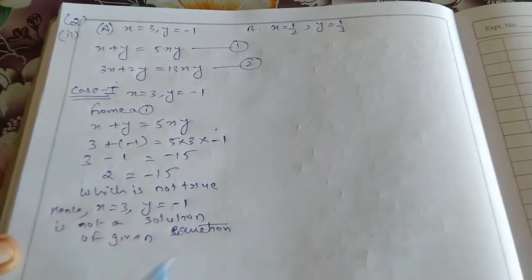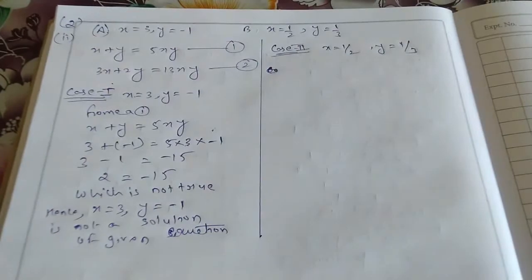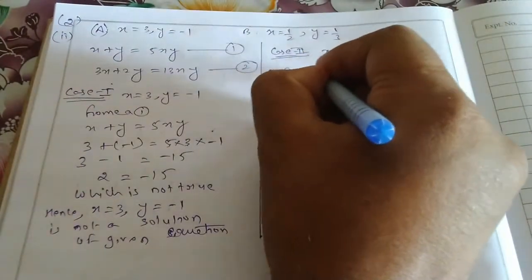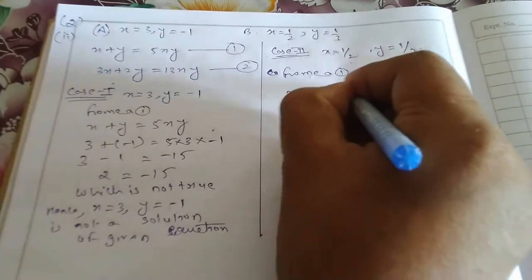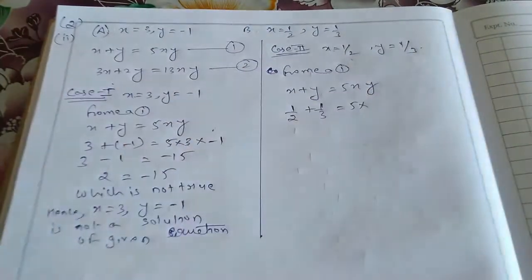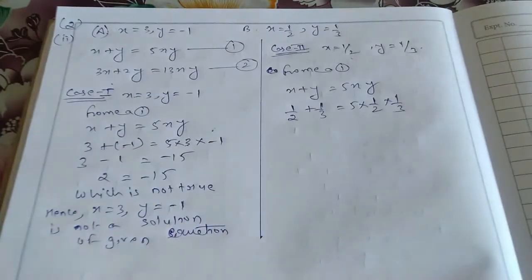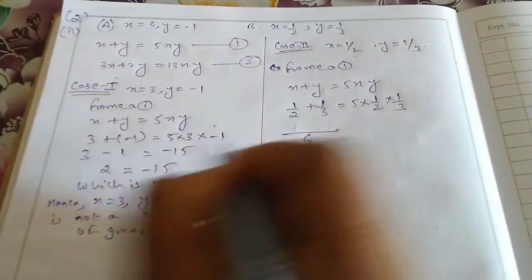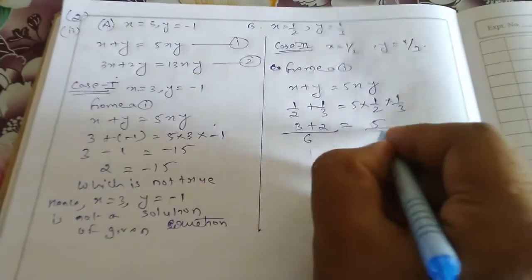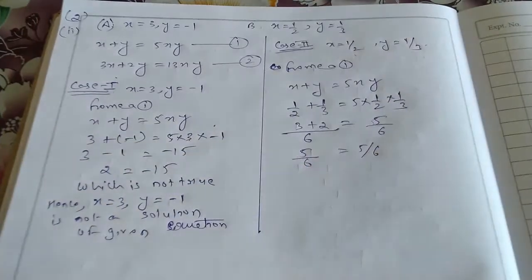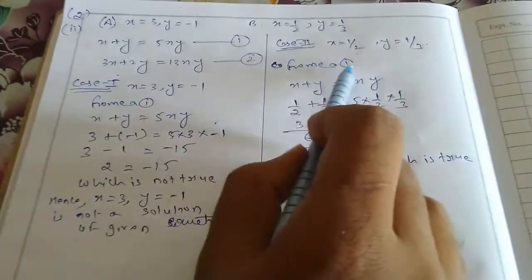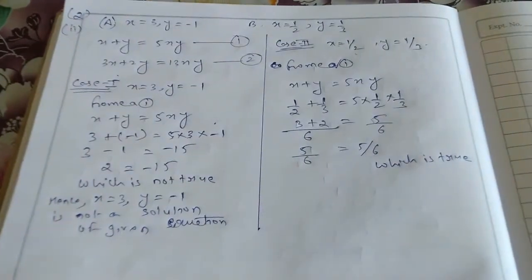Now Case Number 2: x equals to 1 by 2 and y equals to 1 by 3. From equation number 1 — putting here x plus y equals to 5xy: 1 by 2 plus 1 by 3 equals to 5 into 1 by 2 into 1 upon 3. Taking LCM, 3 plus 2 over 6 equals 5 upon 6. So 5 upon 6 equals 5 upon 6, which is true. LHS equal to RHS, so we are going to the next equation.